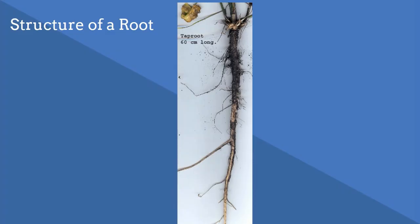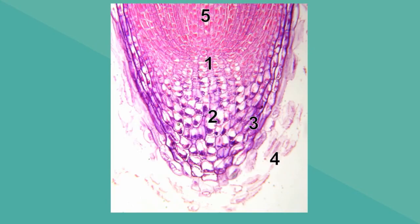Let's take a look at the structure of a root. Notice that the root is kind of pointed. At the end, it is covered with a structure called a root cap. The root cap consists of dead cells and it protects the root from rocks and materials as it grows into the soil.